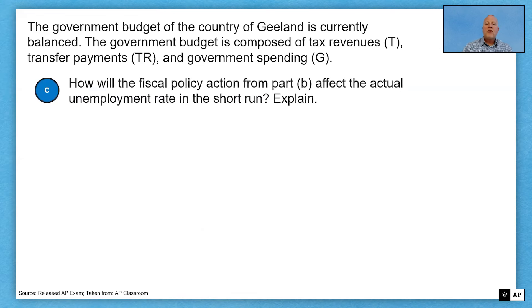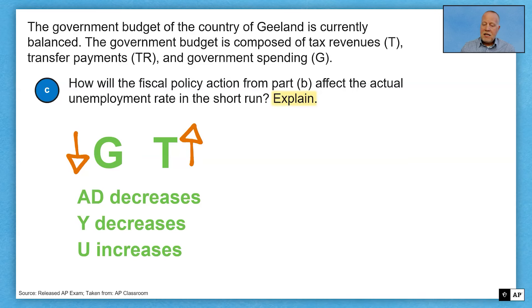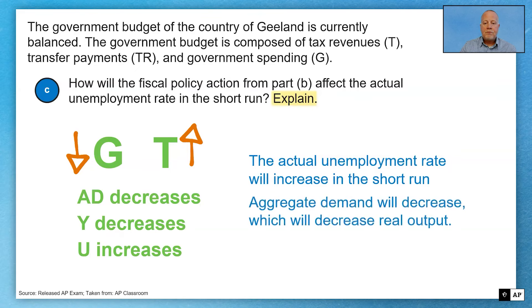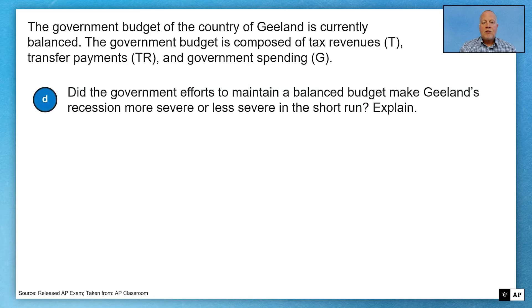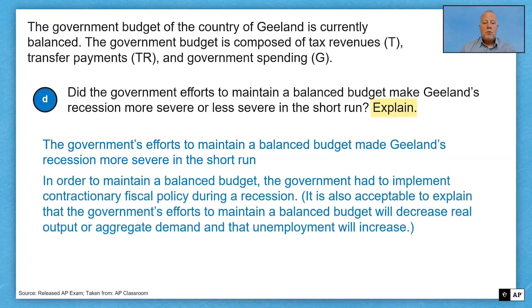Part C: how will the fiscal policy action from Part B affect the actual unemployment rate in the short run? We just had a contractionary policy — spending down, taxes up — that's going to shift AD left, decrease output, and increase the unemployment rate. The actual unemployment rate is going to go up in the short run. Finally, did the government's efforts to maintain a balanced budget make G-Land's recession more severe or less severe? It was a contractionary policy during a recession, so those efforts to balance the budget are going to make the recession more severe, moving further from full employment.